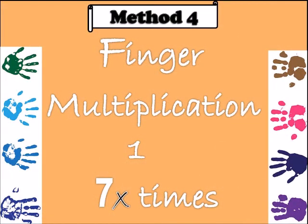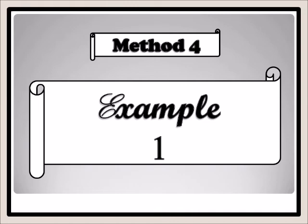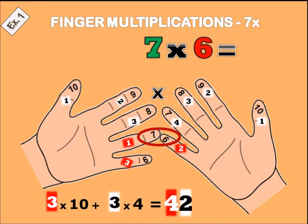Now, finger multiplication — seven times. To use your fingers to multiply, open both palms. The little finger is six, the ring finger is seven, the middle finger is eight, the pointing finger is nine, and the thumb is ten. For seven times six, place the ring finger and the little finger together. Count the meeting fingers and below: one, two, three — three times ten is thirty. On the left you have three fingers up and on the right four, so three times four is twelve. Thirty plus twelve equals forty-two.